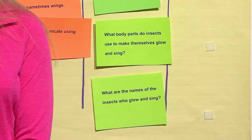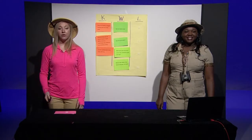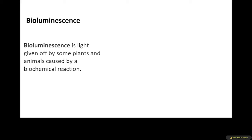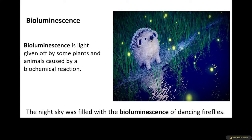Before we begin our read aloud lesson, we're going to review a few vocabulary words. The first vocabulary word is bioluminescence. Bioluminescence is light given off by some plants and animals caused by a biochemical reaction. The night sky was filled with the bioluminescence of dancing fireflies.